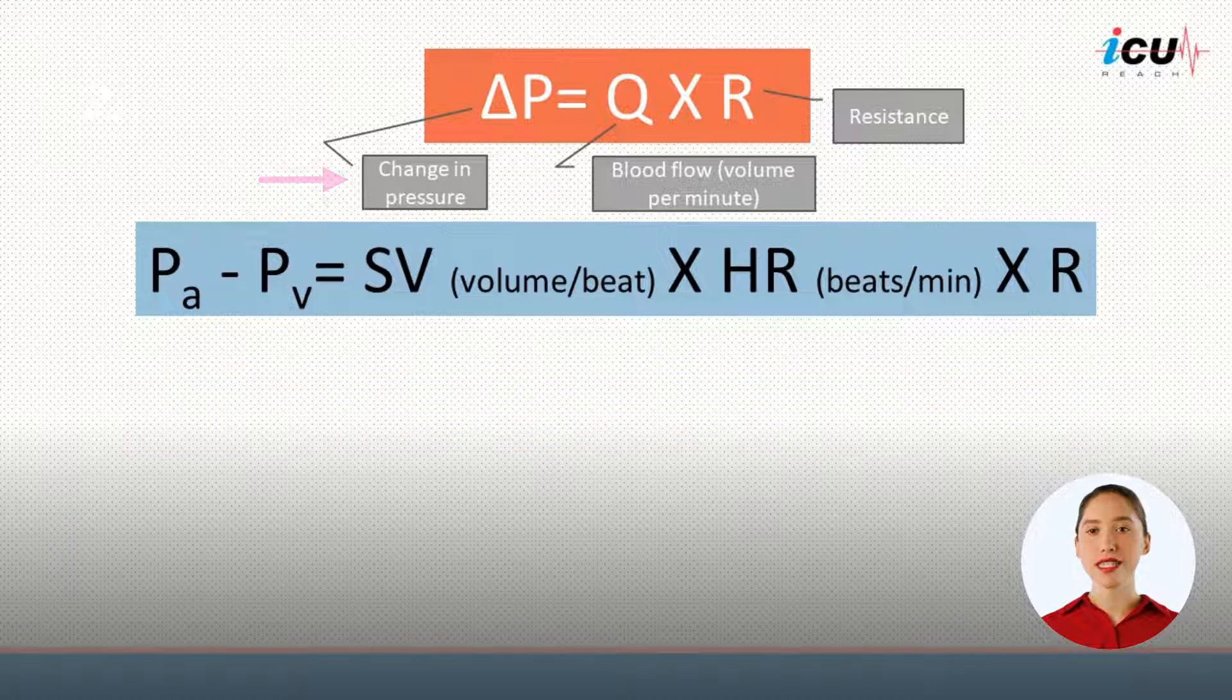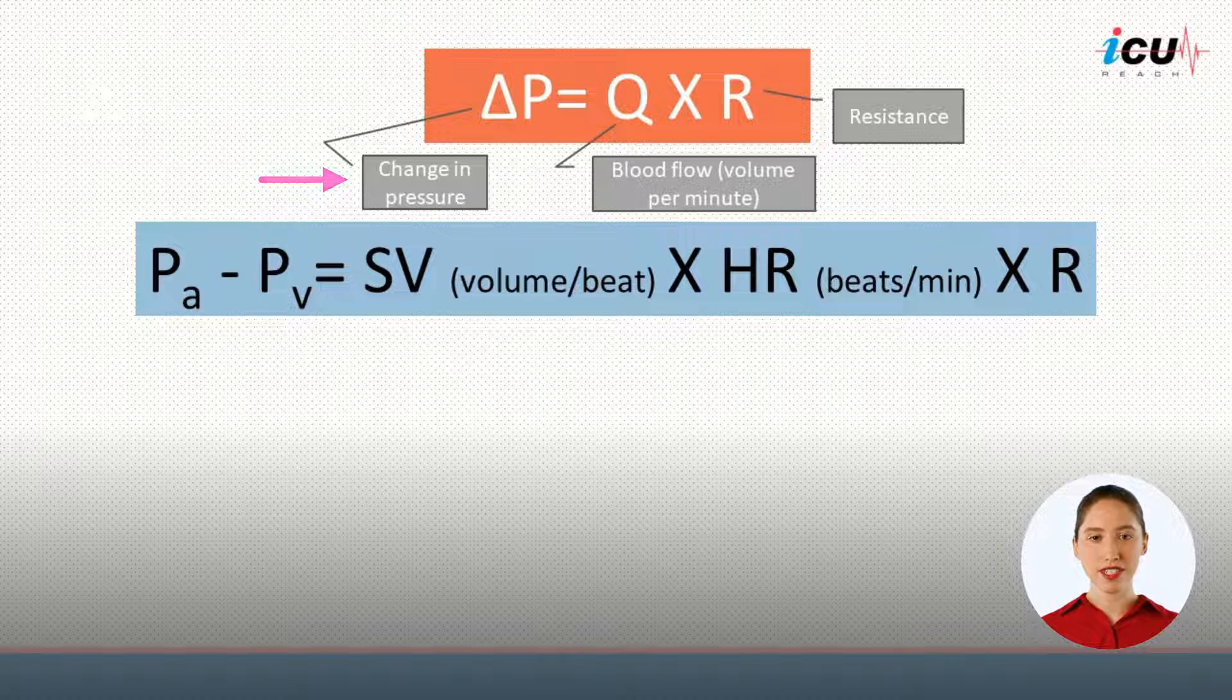So as you see here, delta P stands for the change in pressure between arterial and venous sides of the vascular system, Q is blood flow, and R is resistance.